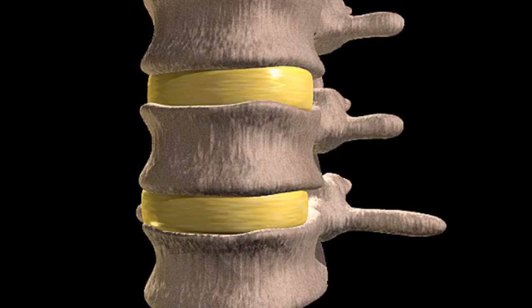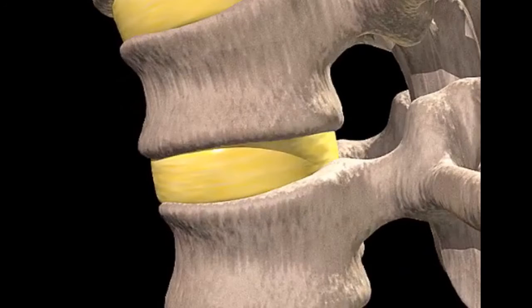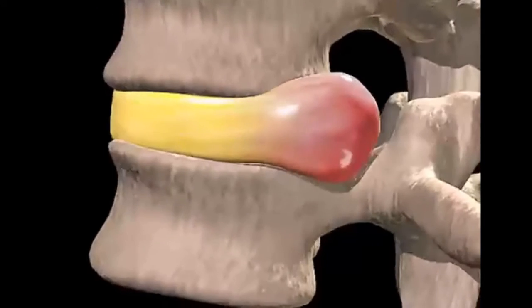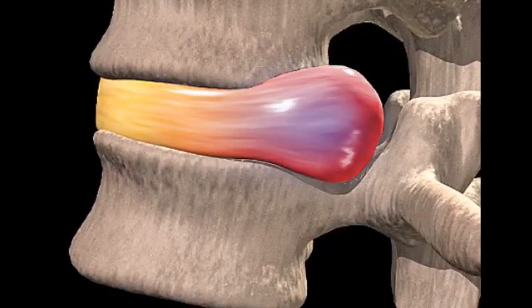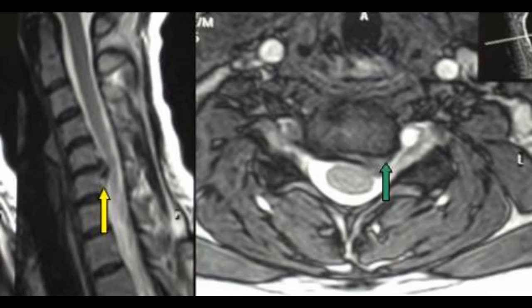A consequence of not following these general rules and guidelines is that it could cause a slip disc or herniation. A slip disc is when the cushioning cartilaginous tissues between the bones of the spinal column get displaced and protrude outwards. This causes pressure on the nerve and is one of the leading causes of chronic pain.